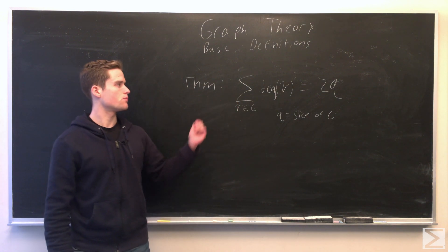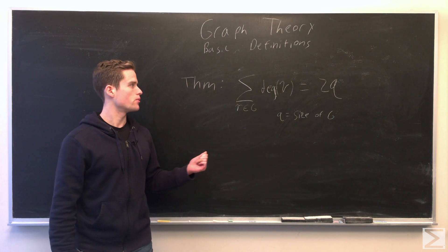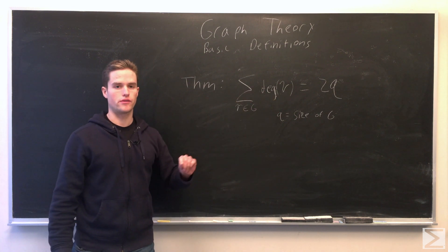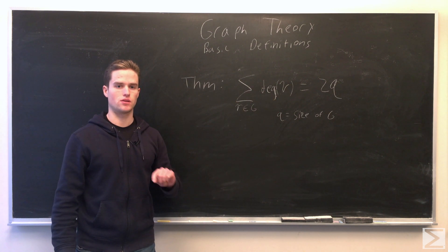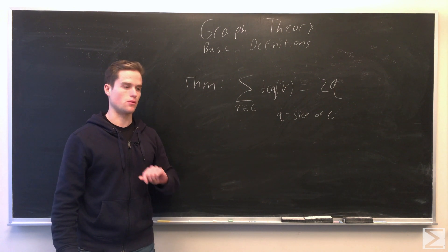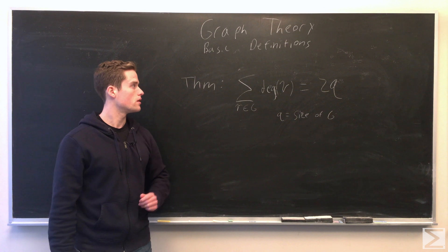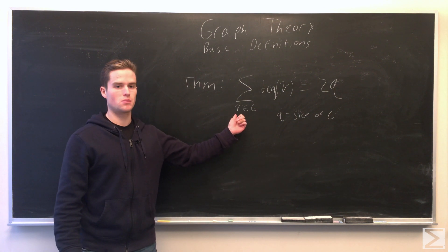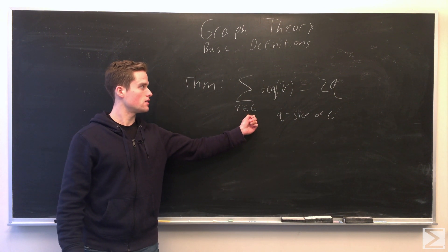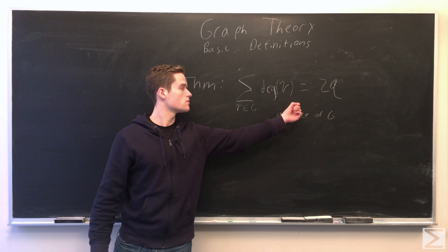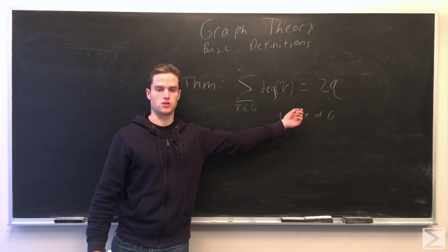So say we have some arbitrary graph G. We're going to find degree of V. That's for any vertex V. The degree is the number of edges around it, so the number of other vertices it has this edge relation to. We can prove, if we take the sum over all V in some graph G, take the sum of all the degrees of V, this will equal 2 times the size of G, the number of edges in G.